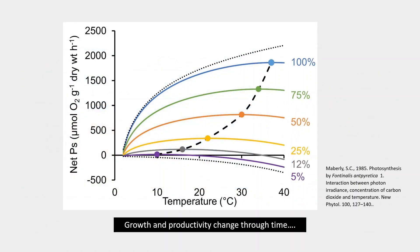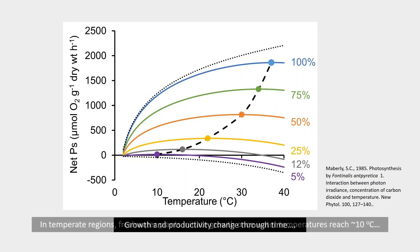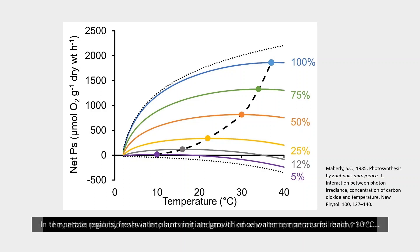Growth and productivity change through time. In temperate regions, freshwater plants initiate growth once water temperatures reach about 10 degrees Celsius. They attain peak biomass in late summer, and are killed when temperatures fall below 3 degrees Celsius.